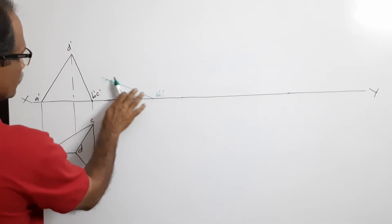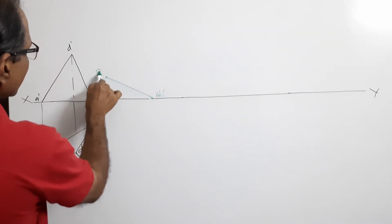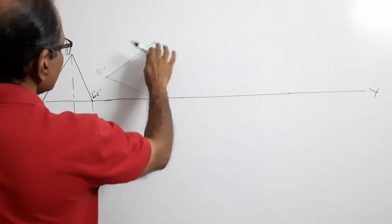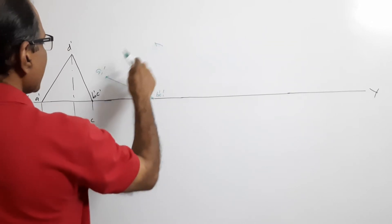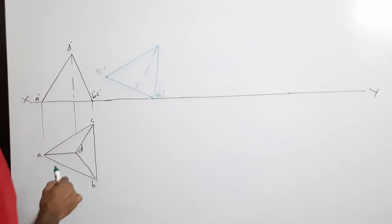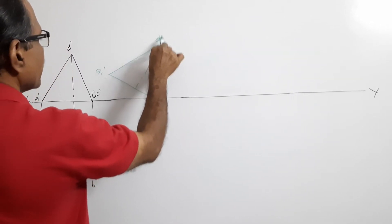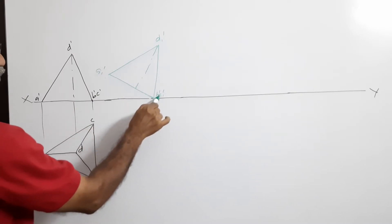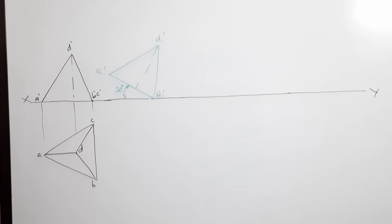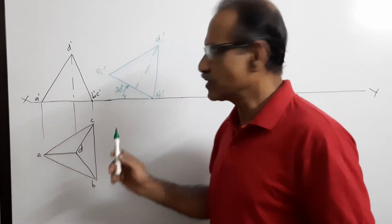Take this distance and mark to get A1-dash. Again take this distance and with this center cut another arc — I get the new redrawn elevation. This is D1-dash, A1-dash, C1-dash, B1-dash. This angle is 30 degrees. The question says the triangular face containing the edge makes 30 degrees, so I redraw the elevation accordingly.